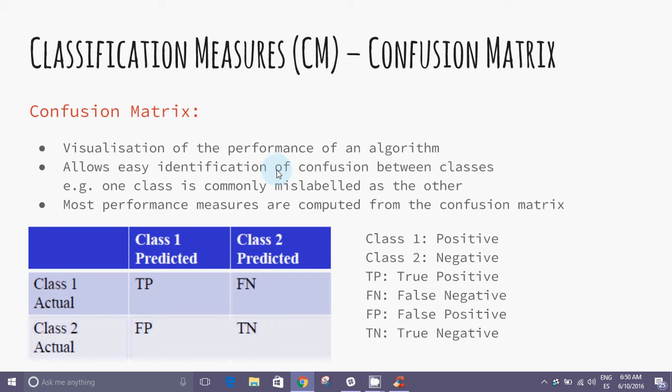The confusion matrix allows the identification of confusion between classes, e.g., commonly one class is mislabeled as the other. If we read the matrix by columns, predictions of class 1 can be either true positive (TP) or false positive. In either case, the model has classified some of the samples as positive. At the same time, prediction of class 2 may be either false negative. The mirror image: the model has evaluated as negative some examples that are really positive.